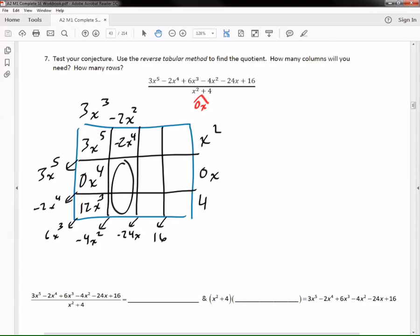Now I can fill in these other missing ones, and so I go negative 2x squared times 0x is going to be 0x to the 3rd. And then I go negative 2x squared times the 4. I get negative 8x squared. Now I'm on to my next column.